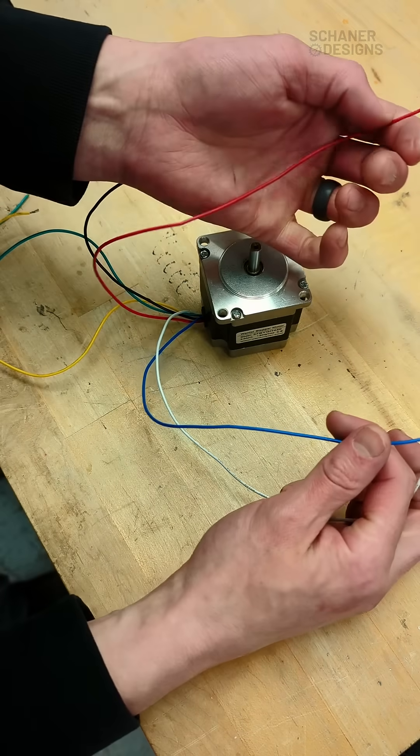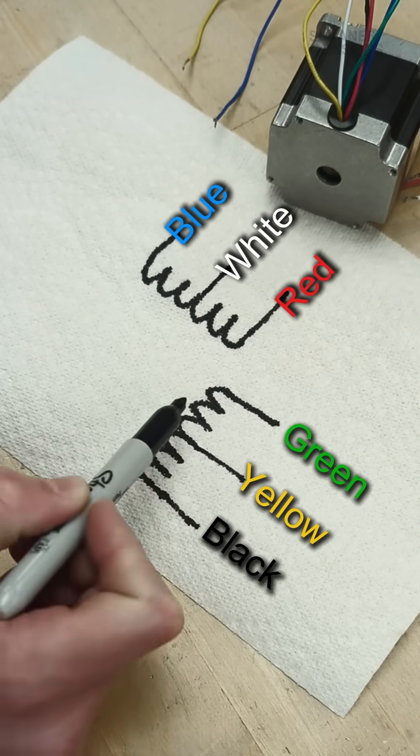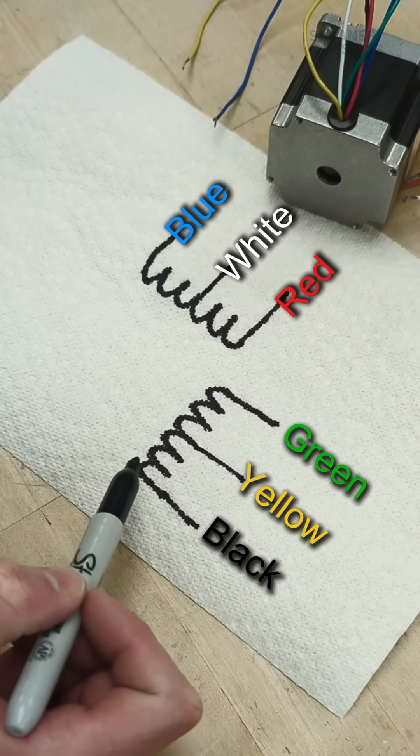So I'm going to assume that blue and red are the ends of one of the coils and white is the center tap on that coil. And then on the other coil, black and green go together—those are the ends of the coil and yellow is the center tap.